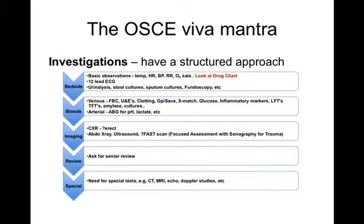For investigations, have a structured approach. Start with the simplest and cheapest and then work up. Bedside tests are often the simplest, such as baseline observations. Don't forget to look at the drug chart — it's so useful. Simple tests include a 12-lead ECG, urinalysis and fundoscopy. Consider your blood tests in two stems: venous and arterial. If the patient is haemodynamically abnormal, consider an arterial blood test. Offer your routine battery of venous blood tests and a few specific ones relevant to the examination — for example, in the last case, a relevant blood test would be a BNP. Then move on to imaging, such as a chest X-ray, with consideration as to whether an erect plain film is needed. You should be thinking of a senior review, with the view of discussing more specialist investigations such as a CT, transthoracic echocardiogram, angiography and so on.